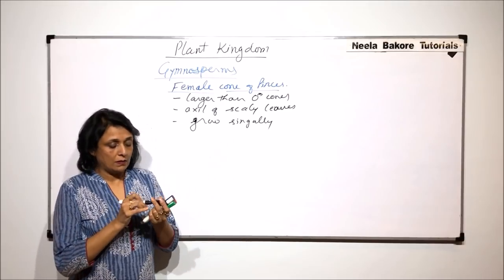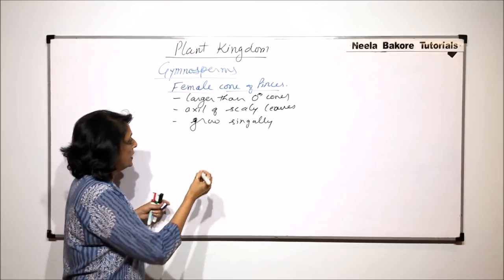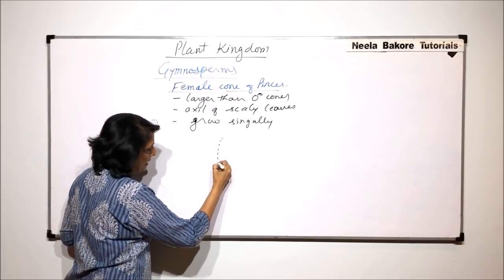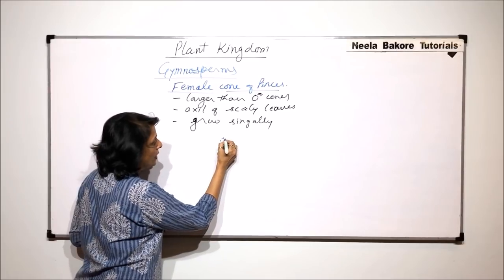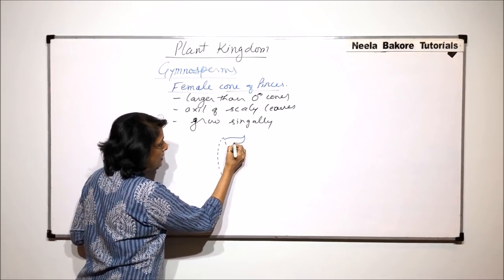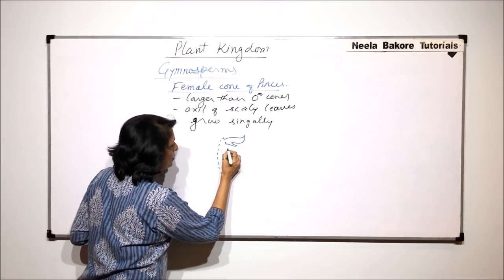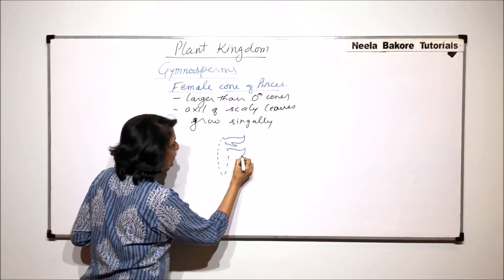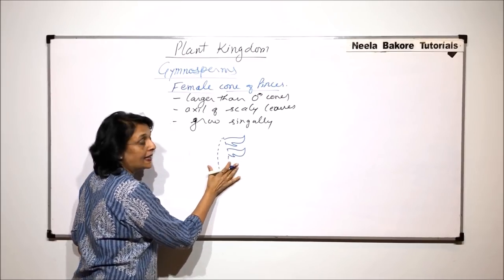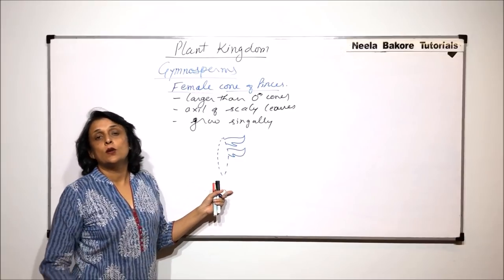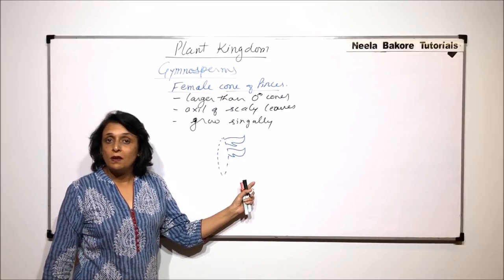This is the basic thing that we need to know about the female cones. Now, if we see the vertical section, we would find the central axis and we would see these megasporophylls spirally arranged. The shape is slightly different than what we made in case of the male cones, and these cones take a long period to develop and this period can be up to two to three years.